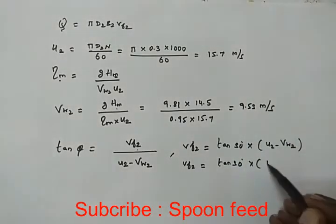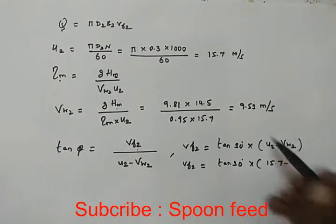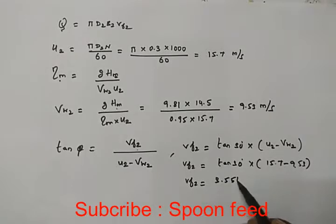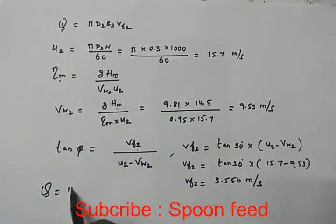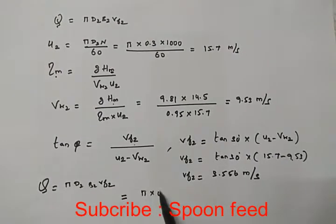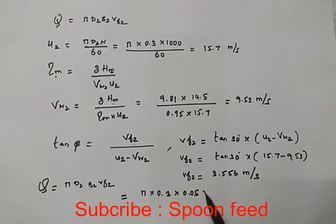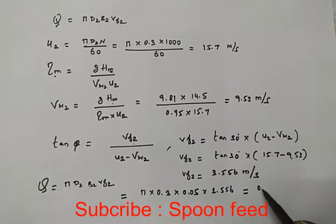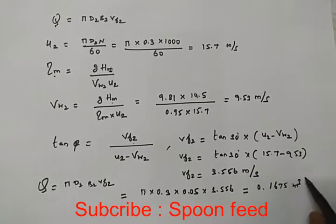We get Vf2 equals 3.56 meters per second. Now using the formula Q equals pi D2 B2 Vf2: Q equals pi times 0.3 times 0.05 times 3.56, which gives us 0.1675 cubic meters per second.